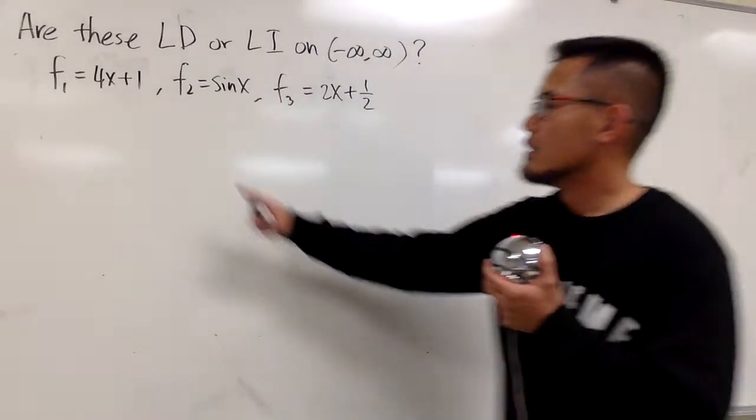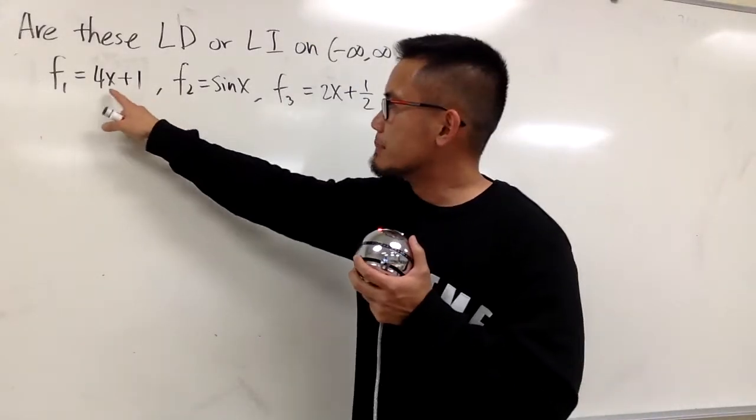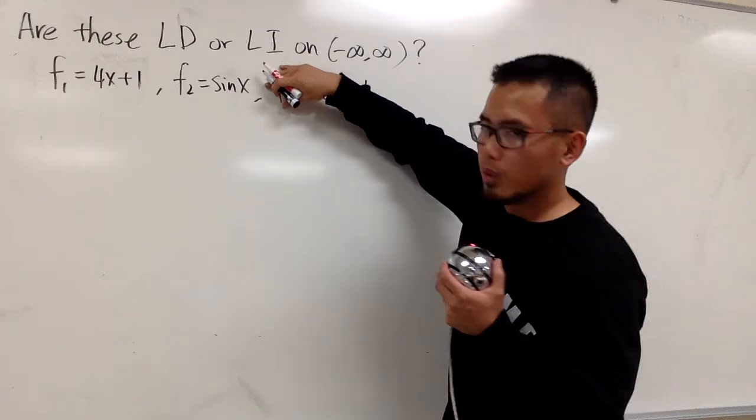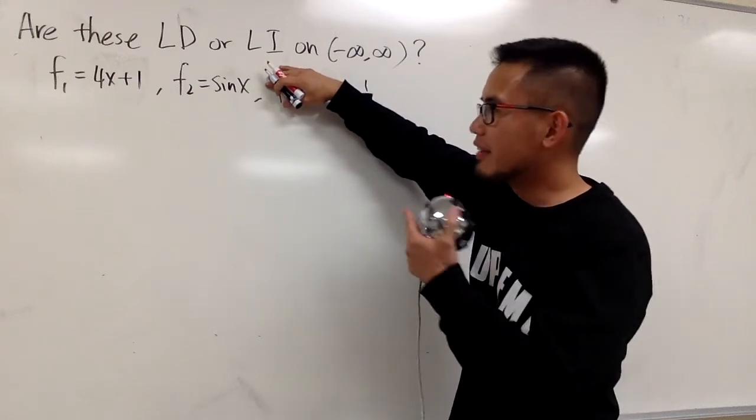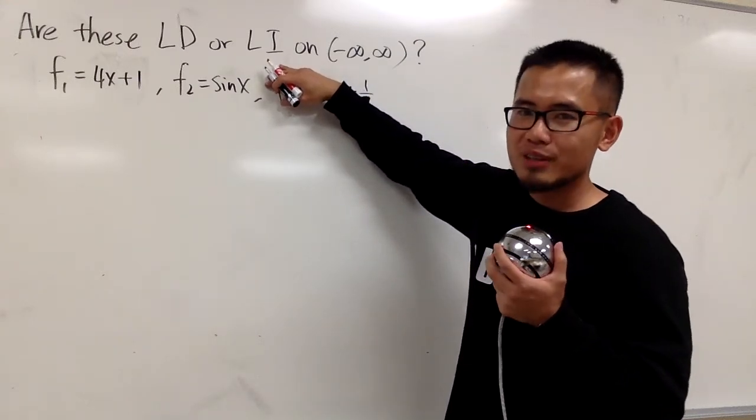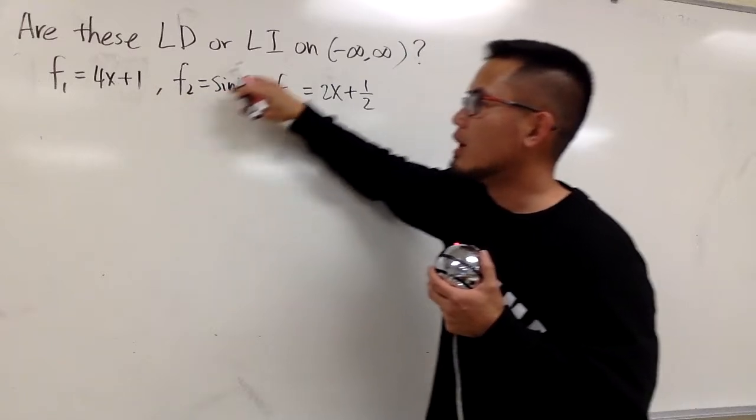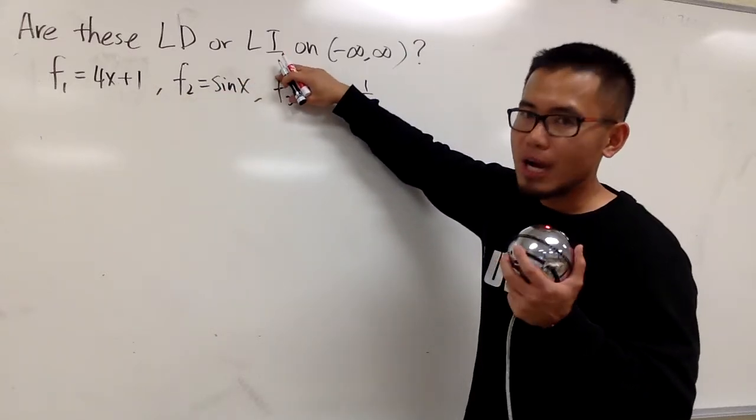And now, let's see. For f1, f2, 4x plus 1 and sinx. Well, they are totally different. They are not constant multiples of each other. So, these two are linearly independent, LI, okay?